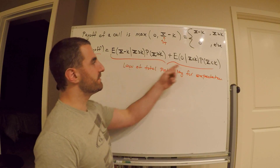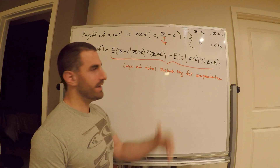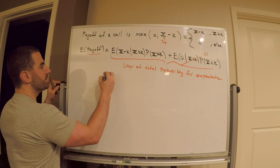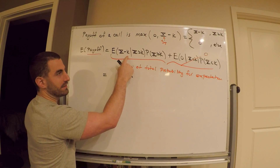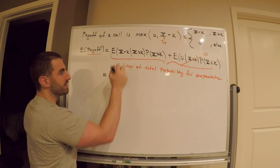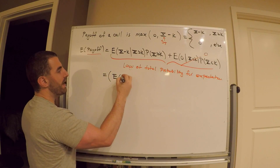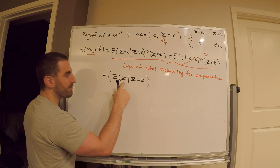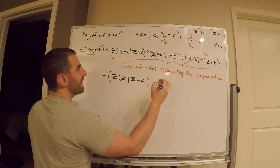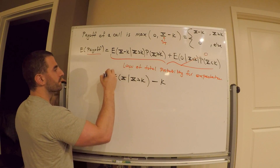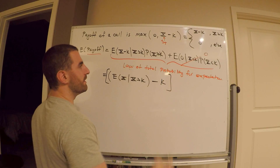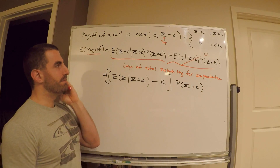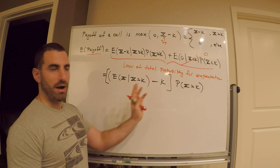Clearly, the expected value of zero given X < K is zero, so that whole term drops out. Now I can do some algebra: this equals the expected value of X given X > K, minus K times the probability that X > K. All I've done is factor out K using properties of expectation — the K comes out, no big deal.